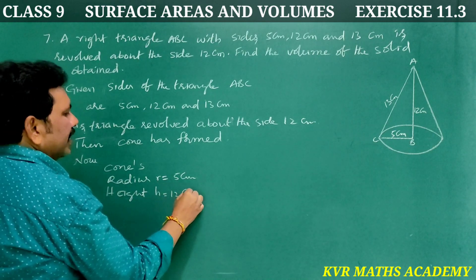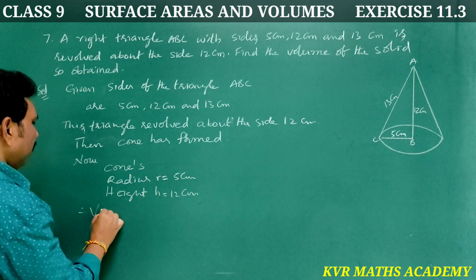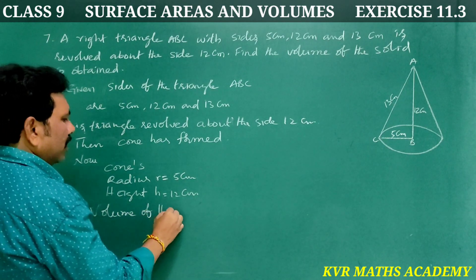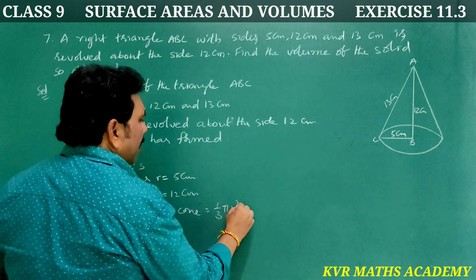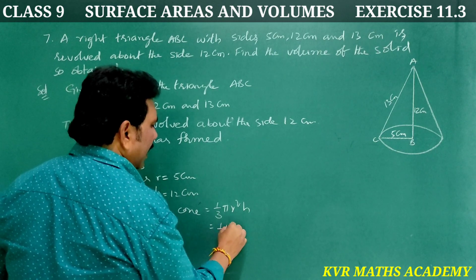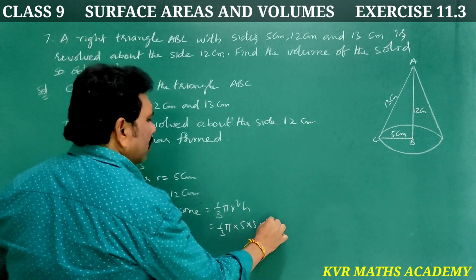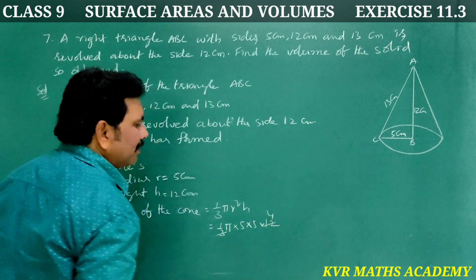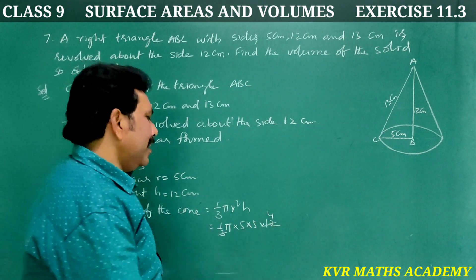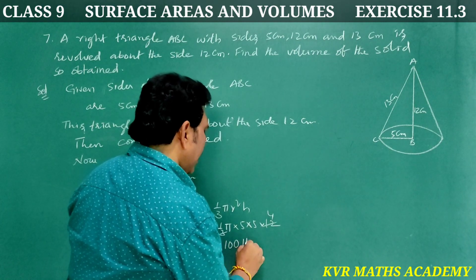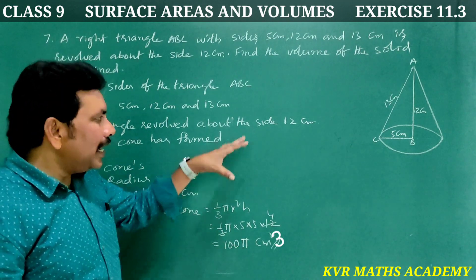Volume of the cone equals one-third π r² h. That equals one-third times π times 5 times 5 times 12. After canceling 3 and 12, we get π times 25 times 4, which equals 100π centimeter cubed.